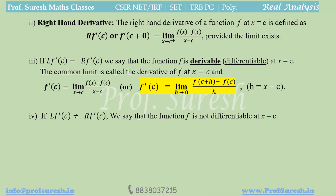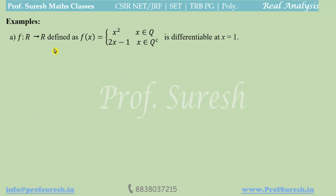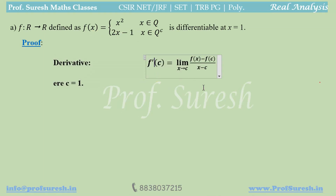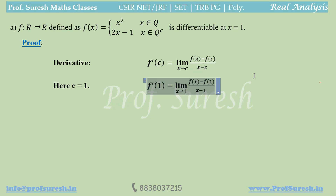Example 1: f from ℝ to ℝ defined as f(x) = x² when x is a rational number, and 2x − 1 when x is an irrational number. Show that f is differentiable at x = 1. For the proof, at x = 1, using the derivative definition: f'(c) = limit as x tends to c of f(x) minus f(c) divided by x minus c.